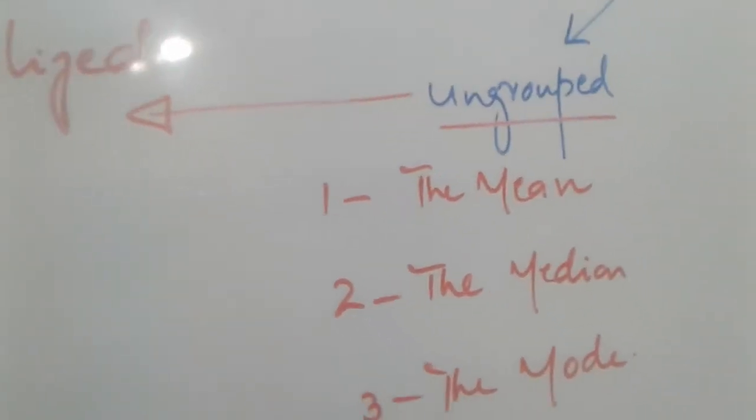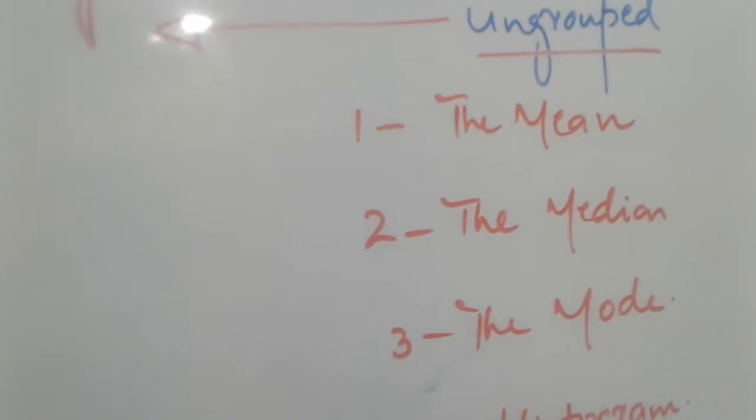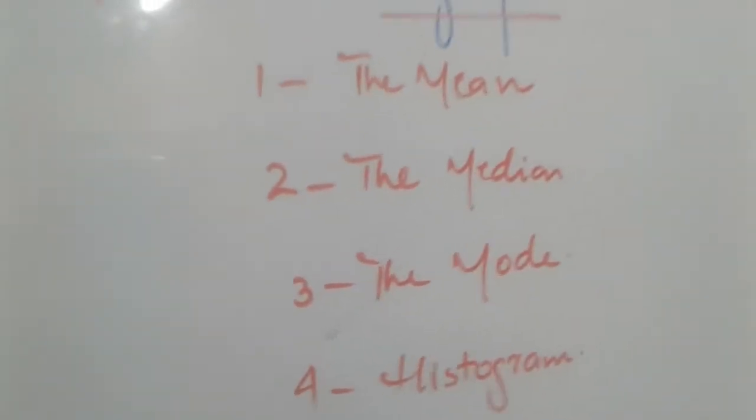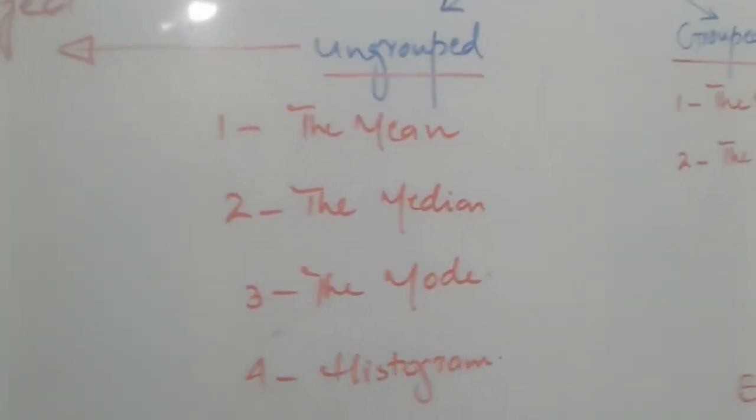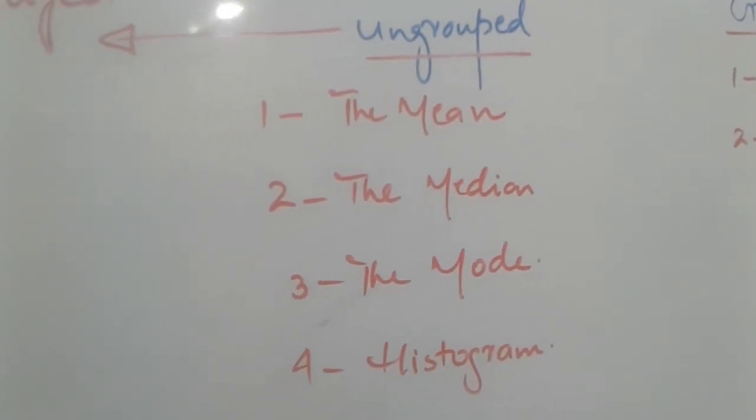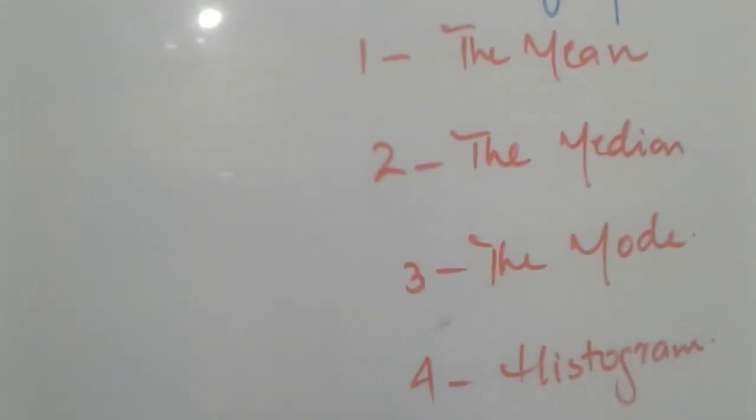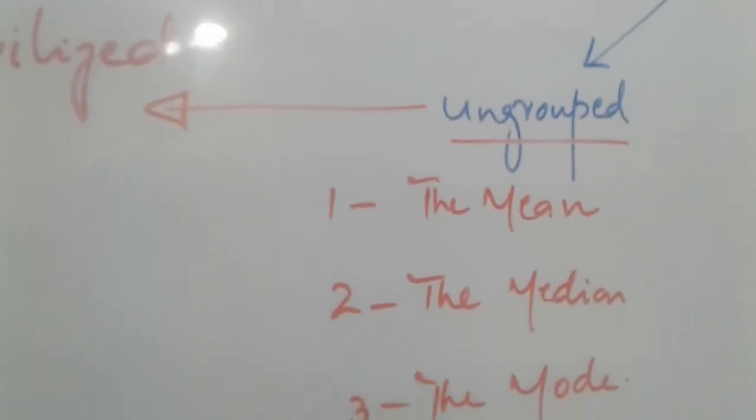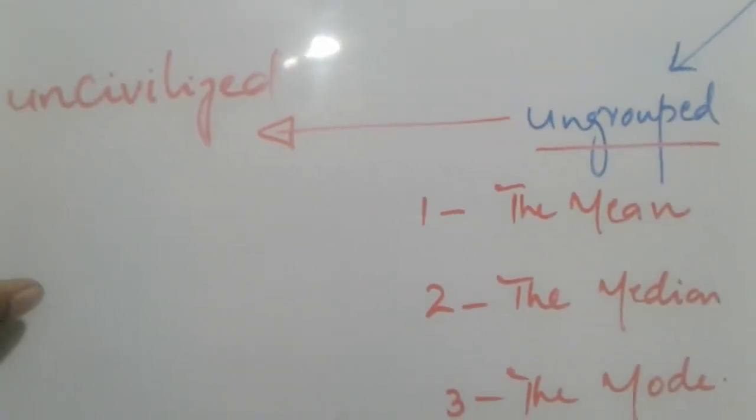What is the meaning of the ungrouped? In ungrouped we don't need any table. We take simple observations and add them to different things. So this is why we say that ungrouped is uncivilized, non-civilized.